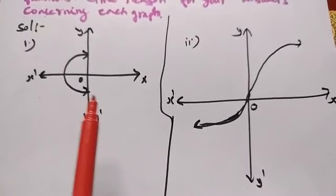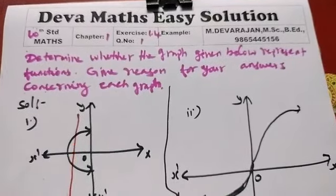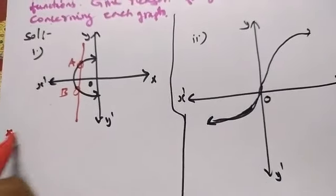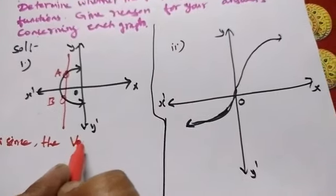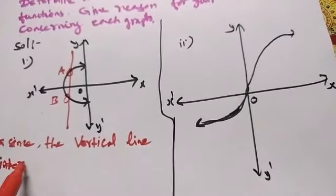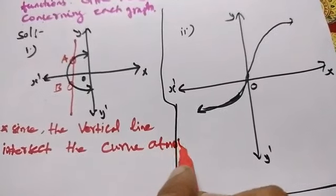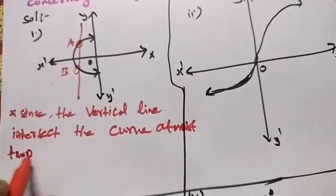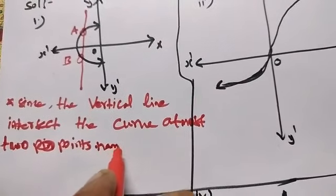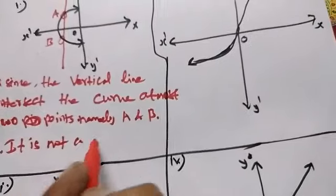Here are 4 points on the graph function. The graph is a complete line. For the first graph, the set of numbers — put in points a and b — since the vertical line intersects the curve at most two points, namely a and b, therefore it is not a function.